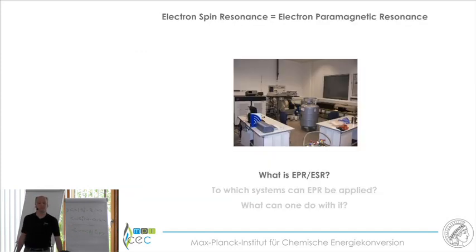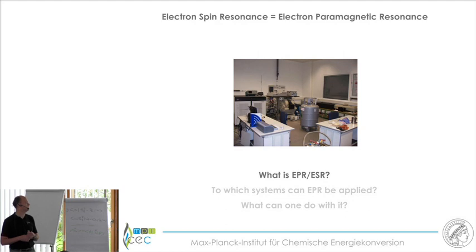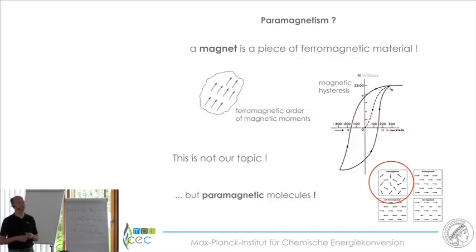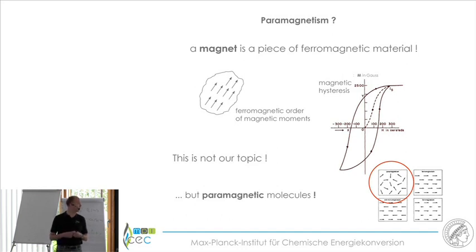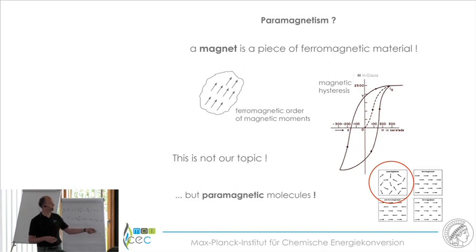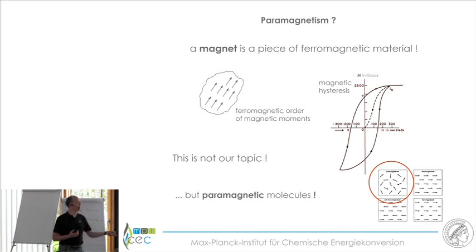EPR is the same as ESR, Electron Spin Resonance, or Electron Paramagnetic Resonance. We are dealing with paramagnetism, not to be confused with ferromagnetism. A ferromagnet — for example, a piece of iron — is a system where all the microscopic magnetic elements, all the spins, are aligned and you get a macroscopic magnetic moment. In paramagnetic systems, for example magnetic molecules in solution, each molecule is magnetic but the interaction between electron spins on different molecules is basically zero. So we have magnetic molecules but no ordering of the magnetization in solution. That's the paramagnetic system.